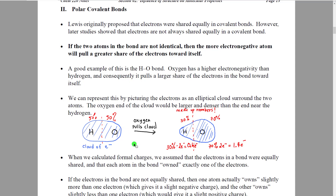When we get to bonding theory, we'll talk about how one of the best ways to represent electrons in bonds is to look at them as a cloud of electron charge. In Lewis theory, Lewis would envision this cloud as being perfectly symmetric — where 50% of the cloud was surrounding the hydrogen and 50% was surrounding the oxygen. But in polar covalent bond theory, the oxygen pulls part of this cloud toward itself so the cloud becomes distorted and egg-shaped.